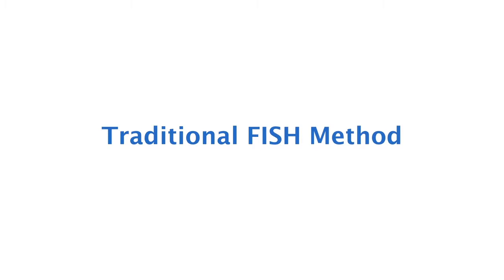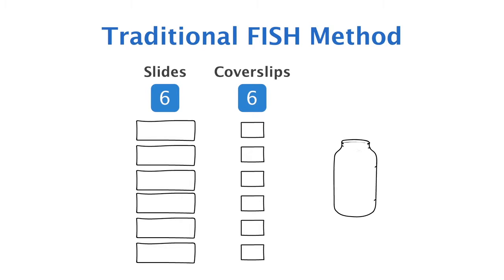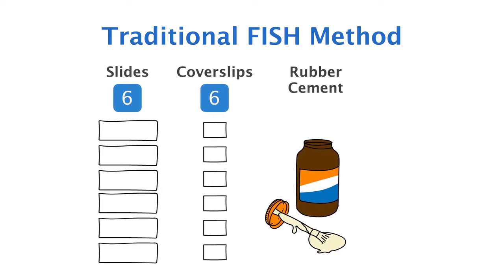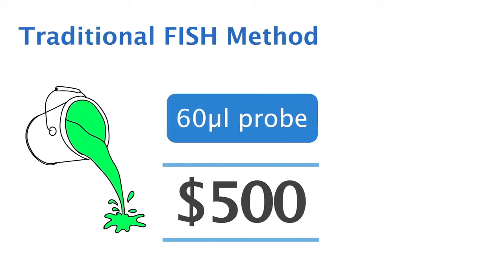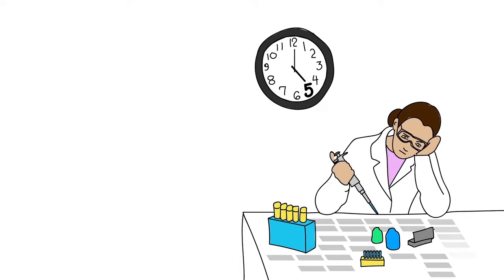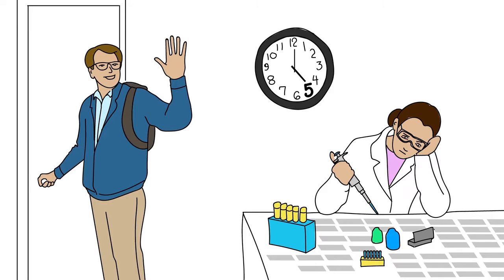First, let's understand the costs of the traditional fish method. Running a six-probed fish panel uses up to six slides, six coverslips sealed with rubber cement, and 60 microliters of probe costing $500 or more. That's dozens of slides and thousands of dollars of probe just to run a typical batch of 10 patient samples.